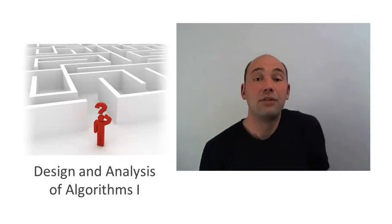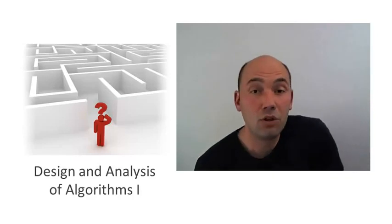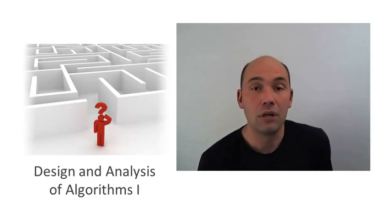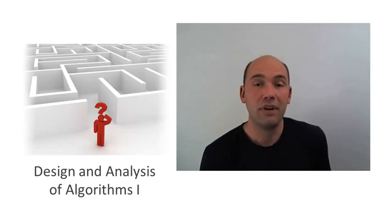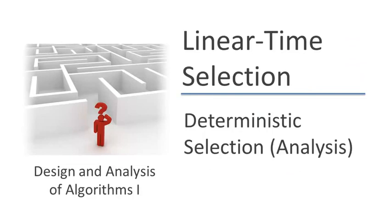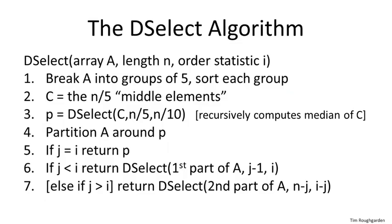Now let's turn to the analysis of the deterministic selection algorithm discussed in the last slide by Blum, Floyd, Pratt, Rivest, and Tarjan. In particular, let's prove that it runs in linear time on every possible input. Let's remind you what the algorithm is. The idea is we take the R-select algorithm, but instead of choosing a pivot at random, we do quite a bit more work to choose what we hope is going to be a guaranteed pretty good pivot.